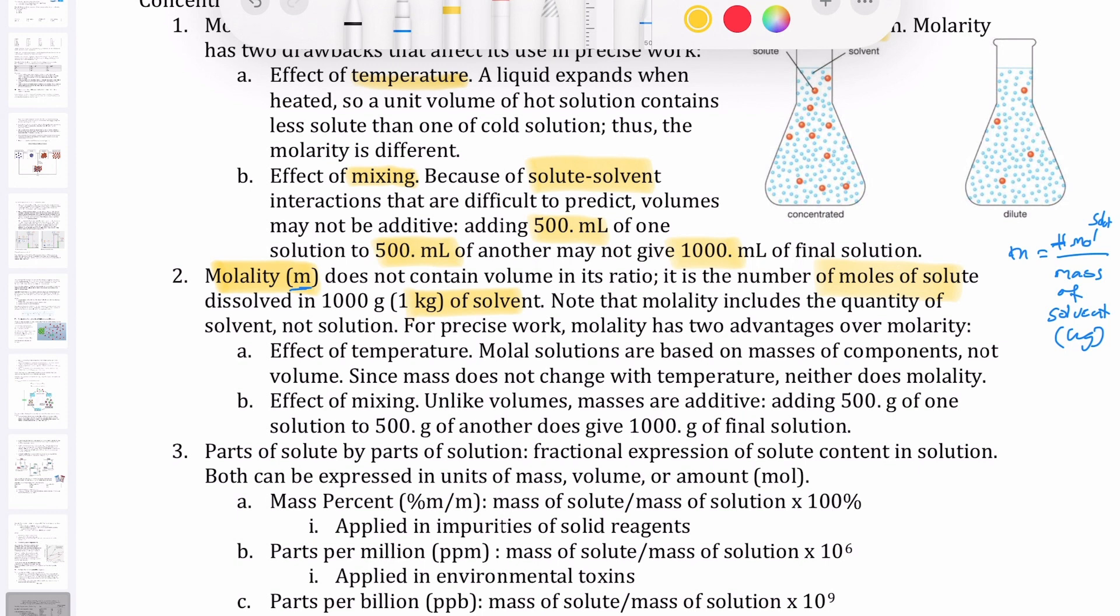which is that first we use mass now, as opposed to volume, so the mass is not going to change regardless of whatever temperature you're measuring the experiment at. And then, because you are using masses, masses are just additive, because those numbers don't change.